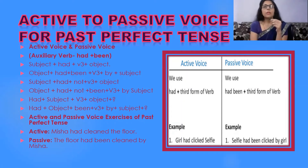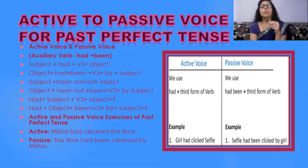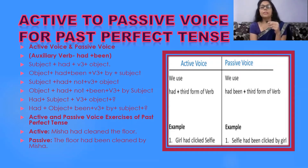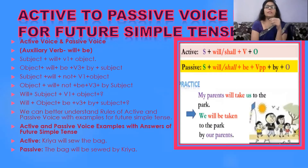Active to passive voice rules for past perfect tense. For example, 'Misha had cleaned the floor' becomes 'The floor had been cleaned by Misha.' When you find 'had', you use 'had been' along with the third form of the verb. Another example: 'The girl had clicked a selfie' becomes 'The selfie had been clicked by the girl.'